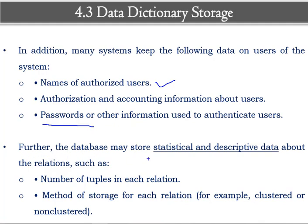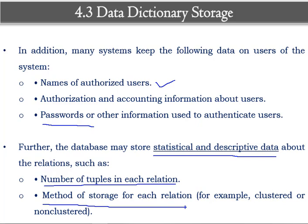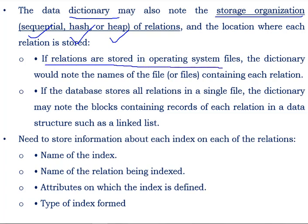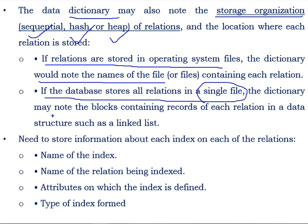Furthermore, the database may store statistical or descriptive data as well. Statistical means number of tuples in a relation and number of attributes in a relation. Descriptive means the method of storage of each relation — what kind of technology we are using to store that particular database in memory, for example whether we are using clustered or non-clustered technique, or continuous storage allocation or heap allocation. The dictionary also keeps information about storage organization — whether we have stored the database using sequential, hash, or heap manner. If relations are stored in the operating system, the dictionary holds the name of the file, and if the database stores all relations in a single file, it holds which block we have kept that database in.